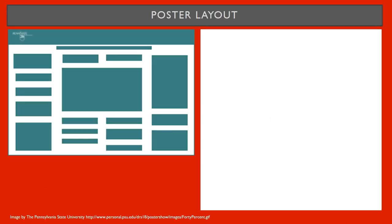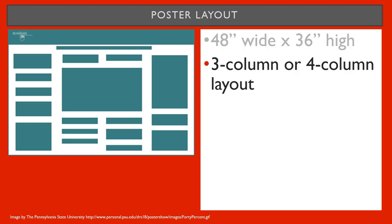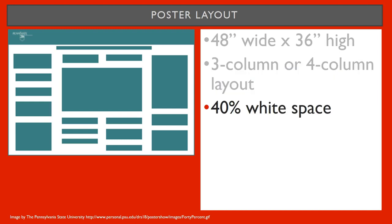A typical poster is formatted in a 3-column or 4-column layout, however there are other options such as horizontal rows. When creating your poster you should aim for about 40% white space or blank area, as the white space contributes to readability and visual interest.